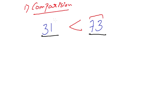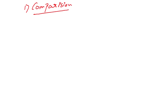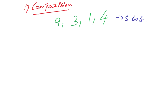Now let us see how comparison can be used. Imagine someone gives you a set of numbers like 9, 3, 1, 4, and asks you to arrange them in order from smaller to greater. What you have to do is compare the numbers and write the smallest number first, then keep continuing until you get the largest number at the end. Consider these four numbers — the smallest among all four is 1, so you write 1 first.